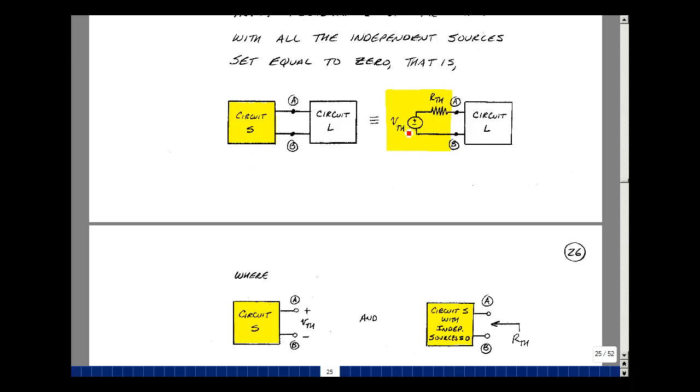The value of V Thevenin is found by disconnecting the load circuit and finding the voltage across the open circuit. We sometimes call this the open circuit voltage, besides the Thevenin voltage.